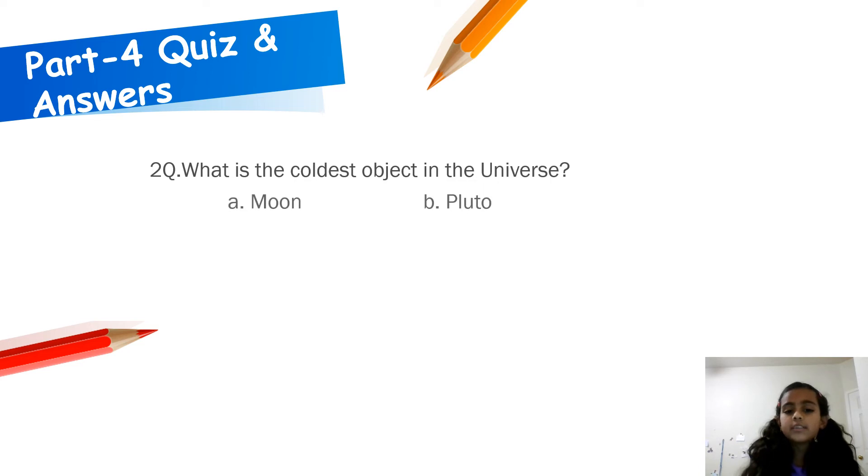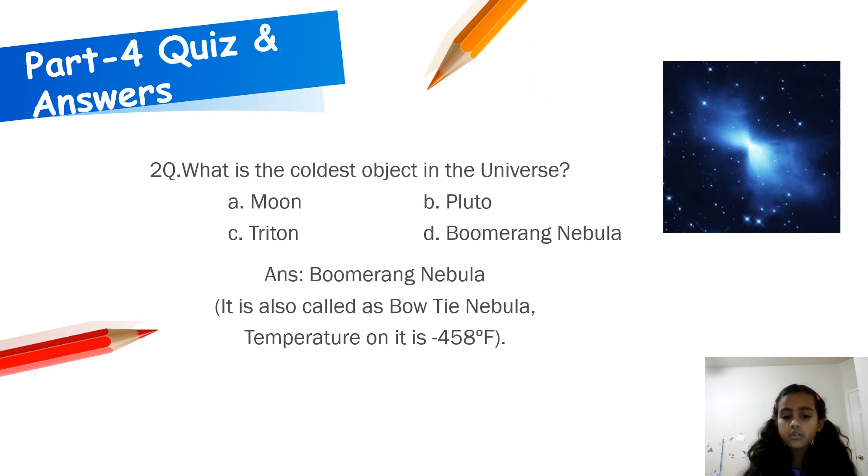Question 2. What is the coldest object in the Universe? A. Moon. B. Pluto. C. Trident. D. Boomerang Nebula. Answer: Boomerang Nebula. It is also called as Bowtie Nebula. Temperature on it is minus 458 degrees Fahrenheit.